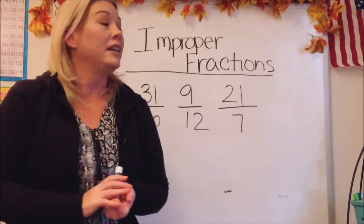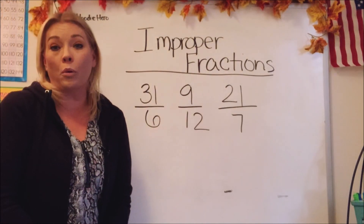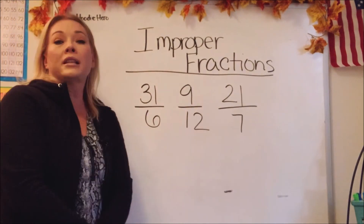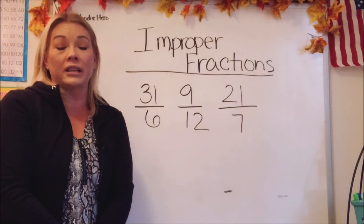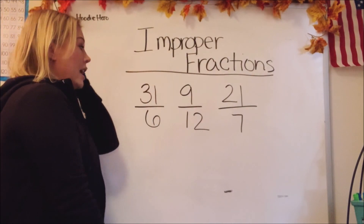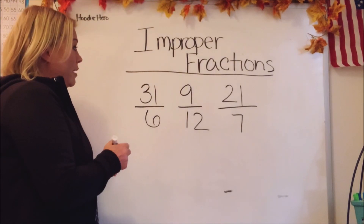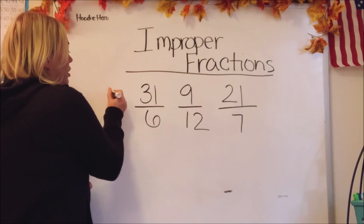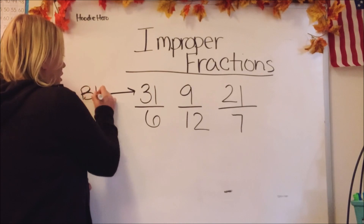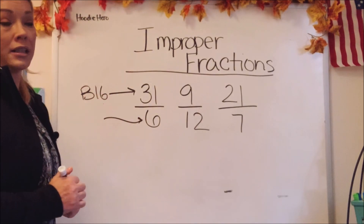I have three different fractions on the board and I just want us to review and see which ones are improper fractions. The definition of an improper fraction is one that is top heavy. What they mean by that is the top number, or the numerator, is bigger than the denominator, or the downstairs number.